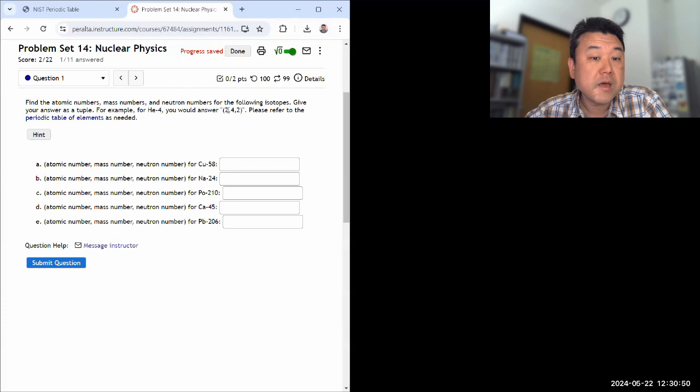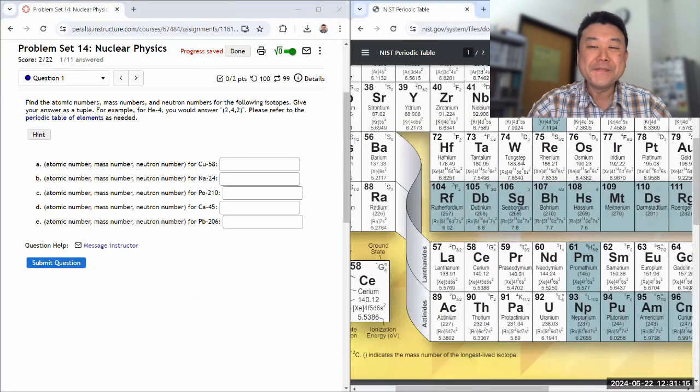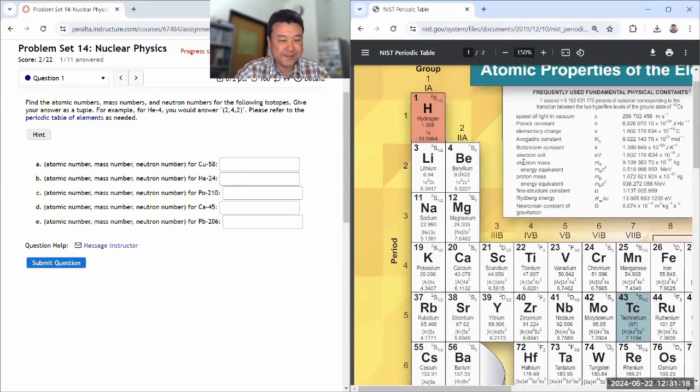Yeah, for helium four, this would be, you know, atomic number is two, mass number is four. It's written right into the name. And the neutron number would be the mass number minus the atomic number, which is the number of protons. So in order to answer this question, I need a periodic table. And, oh, I guess I gave you a link here. Let me use a different periodic table from NIST.